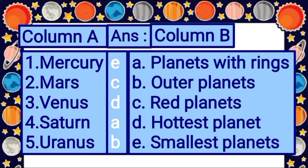Third word from column A is Venus. Answer is option D: hottest planet. Because Venus is the second planet and it is the hottest planet. So for Venus, the answer is option D: hottest planet.